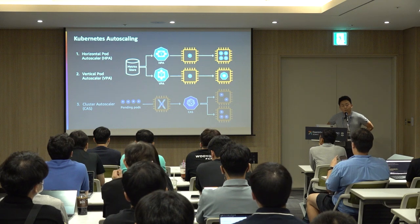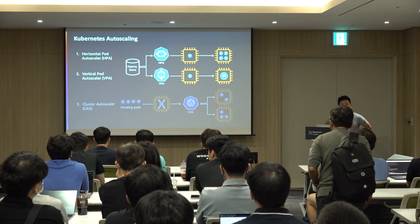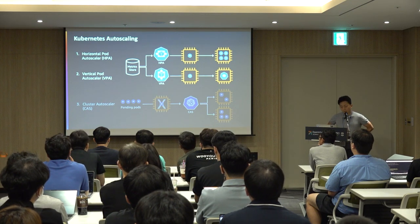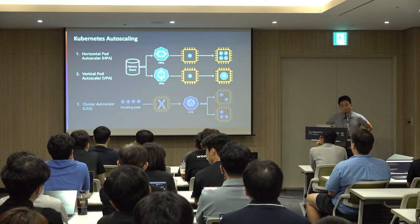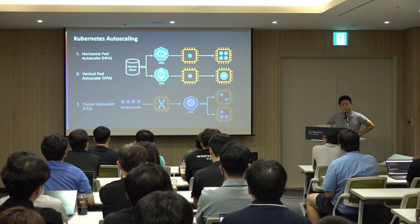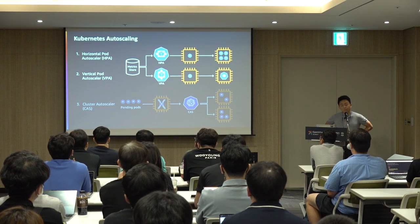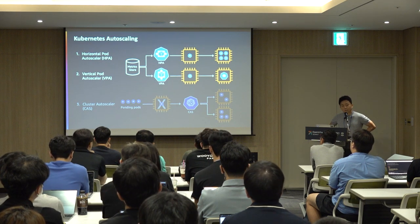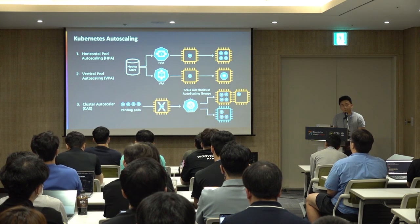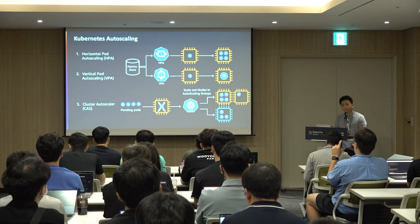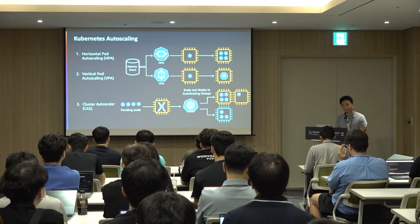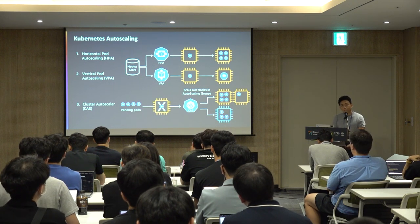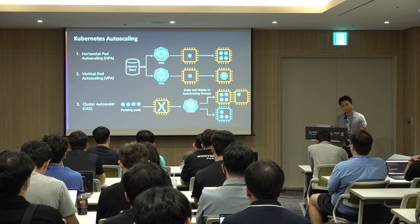In Kubernetes, there are existing autoscaling solutions such as HPA, which automatically scales the number of replicas in your Kubernetes deployment based on target metrics. VPA is a solution to automatically right-size your pod — based on metrics over time, it provides recommended container sizes. Cluster Autoscaler automatically scales the number of nodes when new replicas cannot be scheduled on existing worker nodes, calling auto-scaling groups to add worker nodes for pending pods.